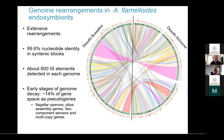These genomes have about 14% of their genes present as pseudogenes. We see pseudogenization in flagellar operons, pilus assembly genes, and sensor genes that would normally sample the extracellular medium. Other multi-copy gene families also seem to be affected by pseudogenization.